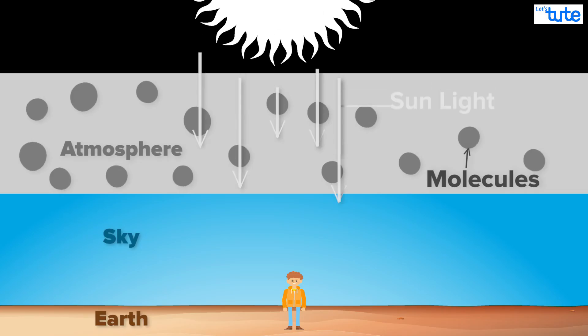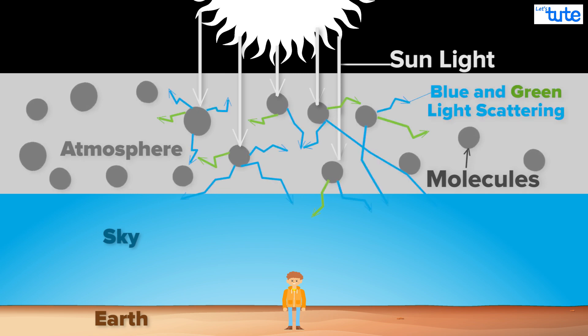At noon, sunlight from the sun goes through the atmosphere. The blue and green colors get scattered as we have talked about before, while the red, yellow and orange light pass through and reach your eye.